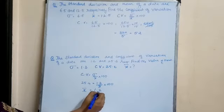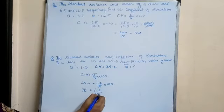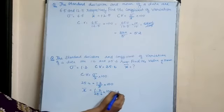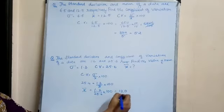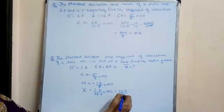1.2 divided by 25.6 into 100. So 120 divided by 25.6.